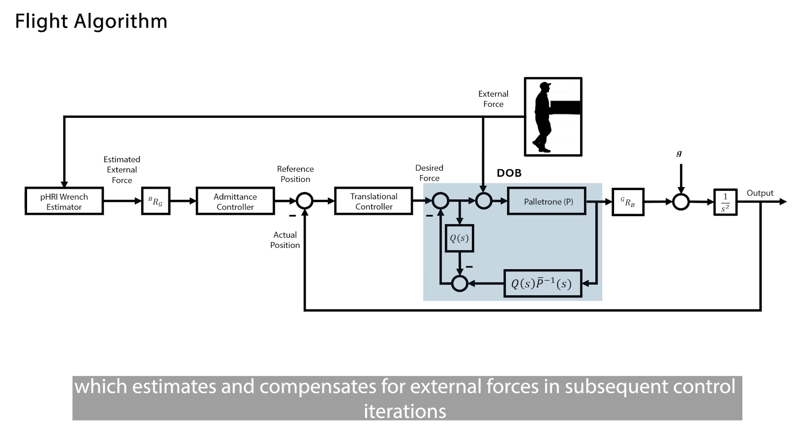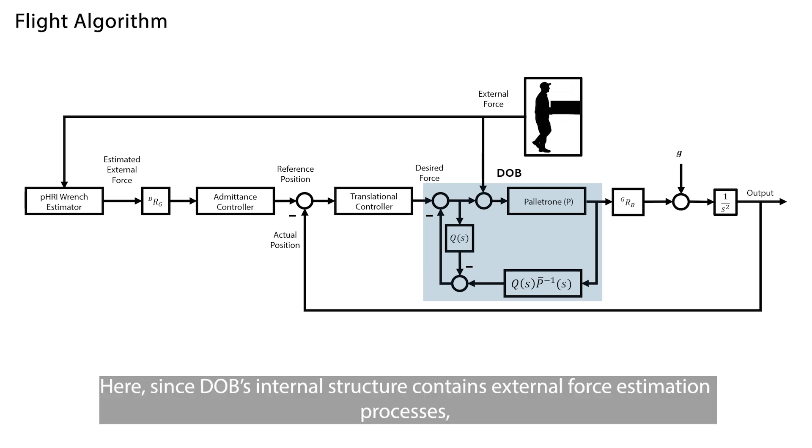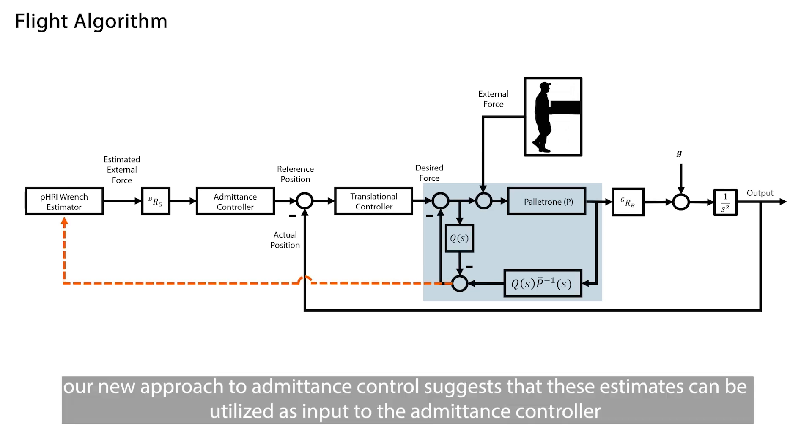Here, since DOB's internal structure contains external force estimation processes, our new approach to admittance control suggests that these estimates can be utilized as input to the admittance controller.